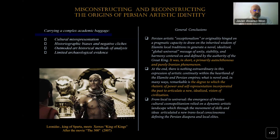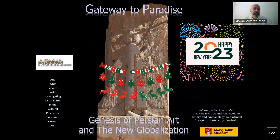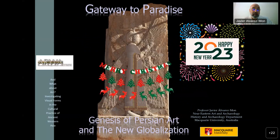It was within the dialectic established between the local and the universal, the old and the new, tradition and modernity, that Persian art was born. Its originality hinged on a pragmatic capacity to draw on the inherited wisdom of Elamite local traditions to generate a noble, idealized, universal message of unity, stability, and harmony centered on and defined by the authority of the great king. It was, in short, a primarily autonomous and purely Iranian phenomenon. Thank you for listening, and I take the opportunity to wish you a happy new year and a merry Christmas as well.